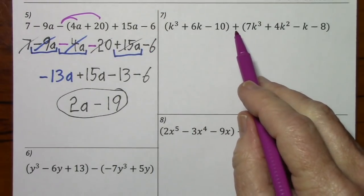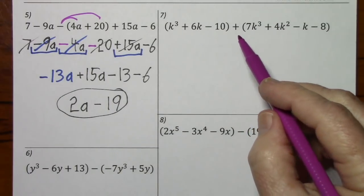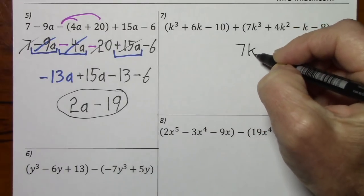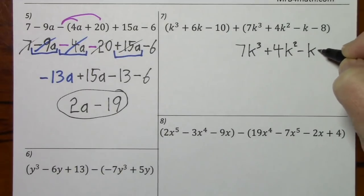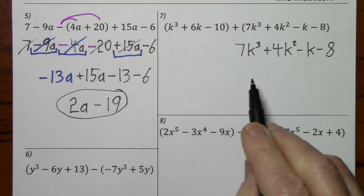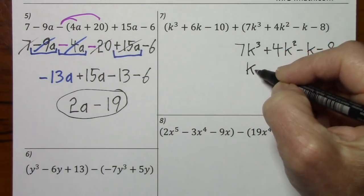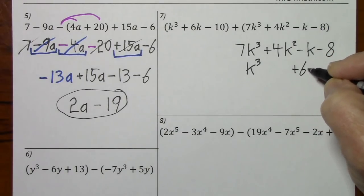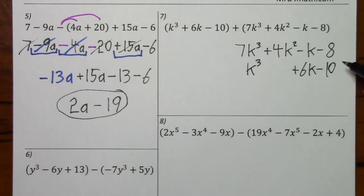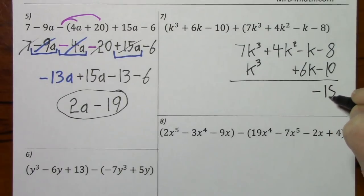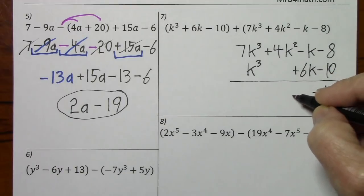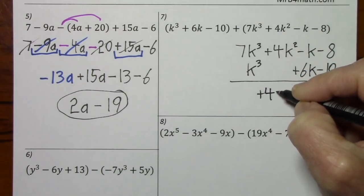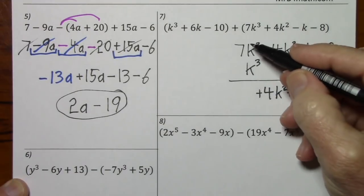Looking at number 7, we have a positive in front of the parentheses, so if I distribute that, nothing's going to change — I can basically just drop the parentheses. I'll bring everything down and stack these under the corresponding like terms. K to the third, 6k — I don't have a k squared term, so it's going to go here, and negative 10. So we have negative 1k and 6, and 4k squared just comes down. There's a 1 in front.